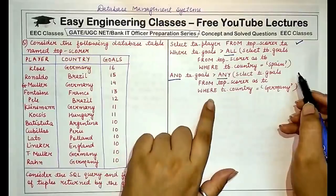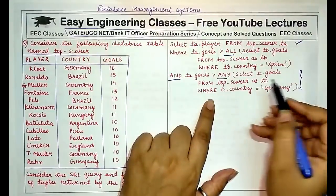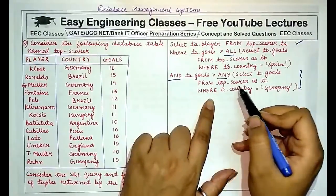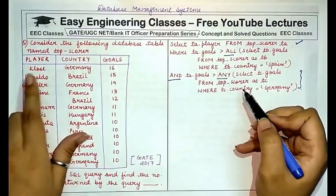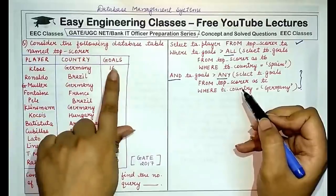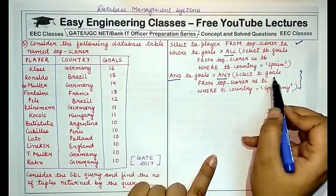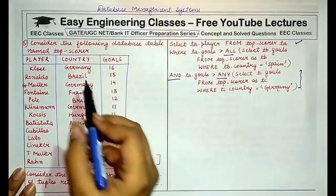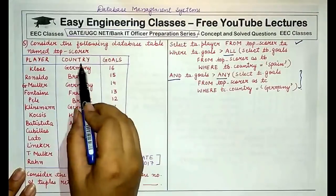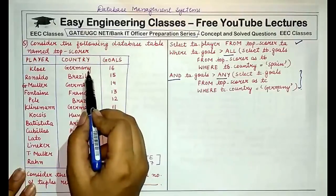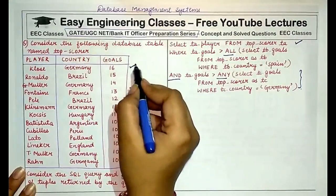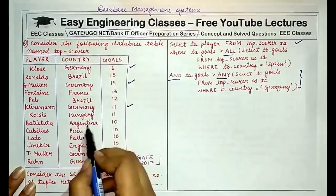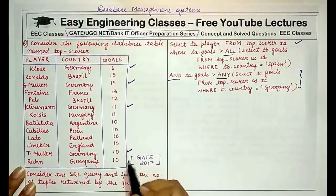The innermost query reads as: select goals from top scorer where country is equal to Germany. The Top Scorer table contains columns player, country and goals. We have to select goals from rows where country equals Germany — this value, this value, this value, and the last two values.